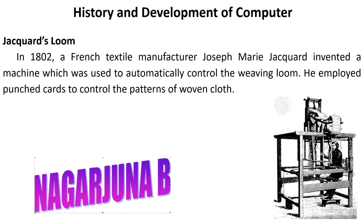In the year 1882, a French textile manufacturer Joseph Mary Jacquard invented a machine to automatically control the weaving loom. He employed a punctured card to control the patterns of the woven cloth. This is called Jacquard's Loom.